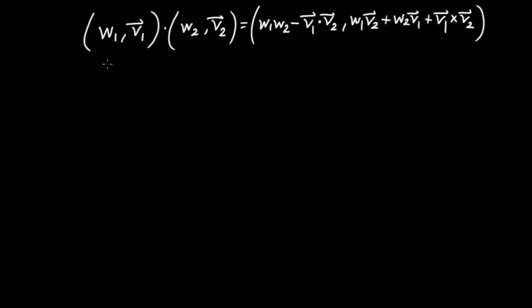I've rewritten the result we've just obtained in slightly different notation. I have two quaternions called (W1, V1) and (W2, V2) — just renaming the scalar parts as W's and the vectors as V's, a V1 and a V2.